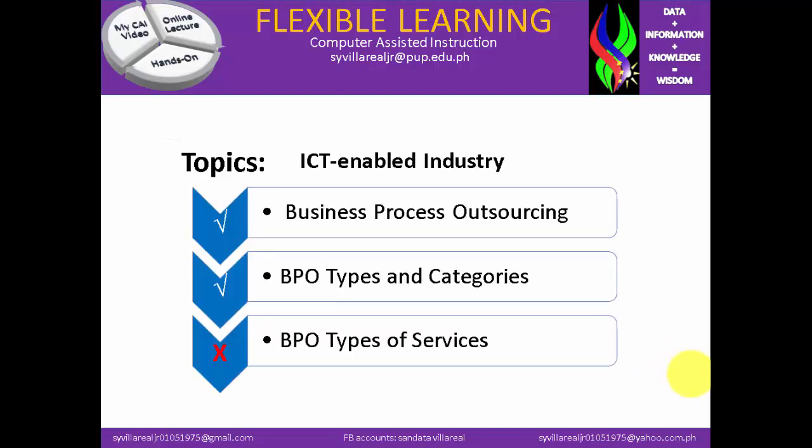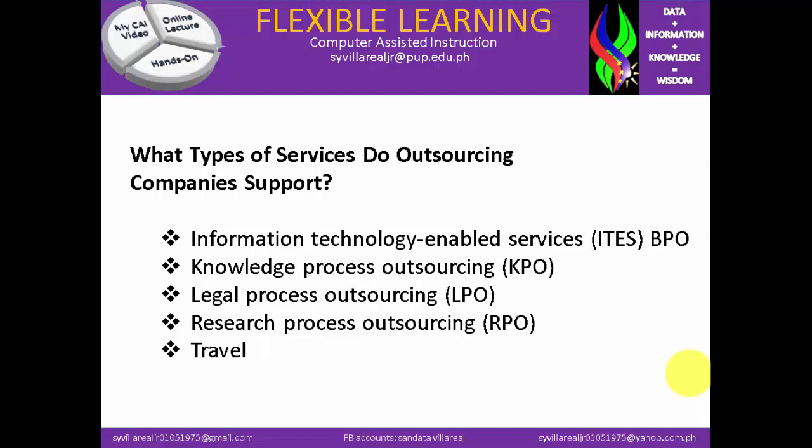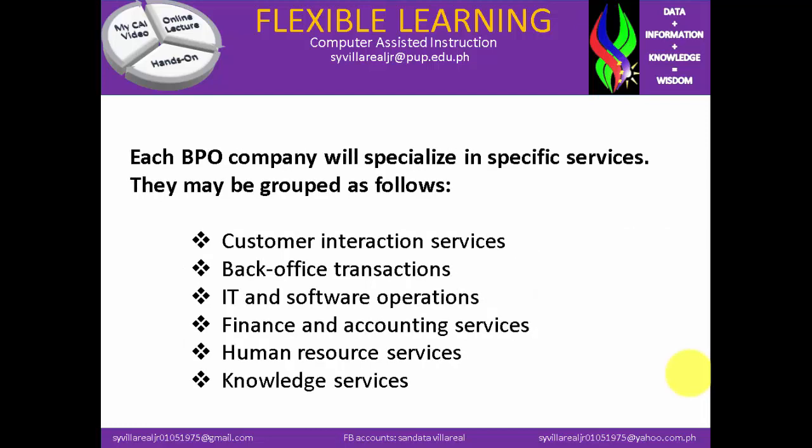Let's move on to BPO types of services. What type of services do outsourcing companies support? The first one is information technology enabled services, which is ITES — it is essentially the same as BPO. The second one is knowledge process outsourcing, KPO. The third one is legal process outsourcing, LPO. The fourth one is research process outsourcing, RPO. And the fifth is travel. Each BPO company will specialize in specific services, and they may be grouped accordingly.